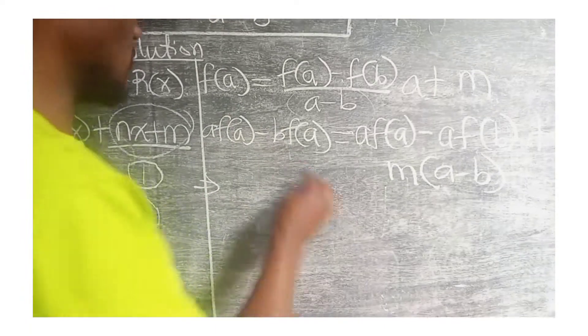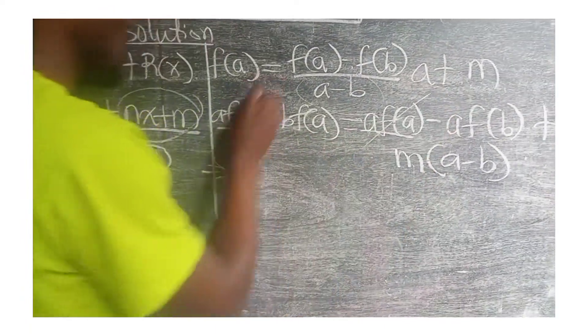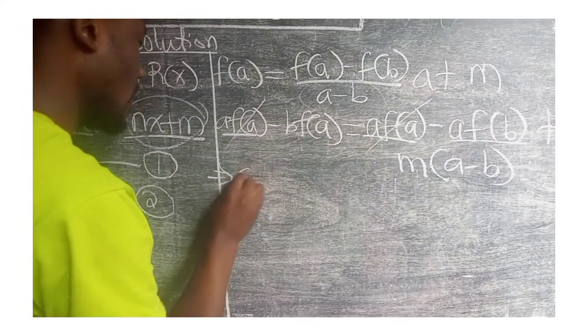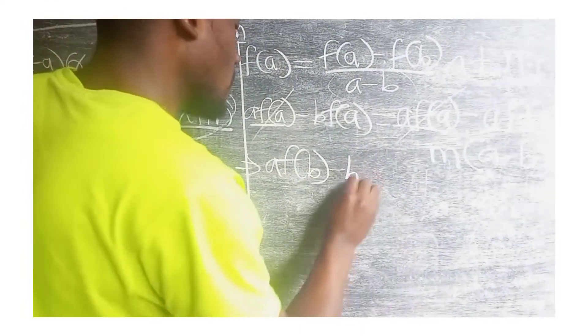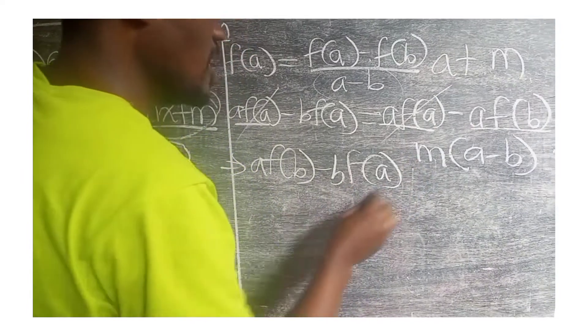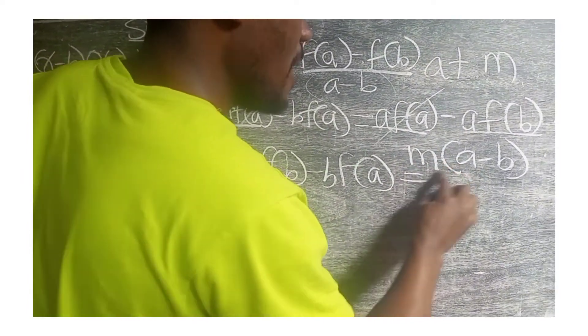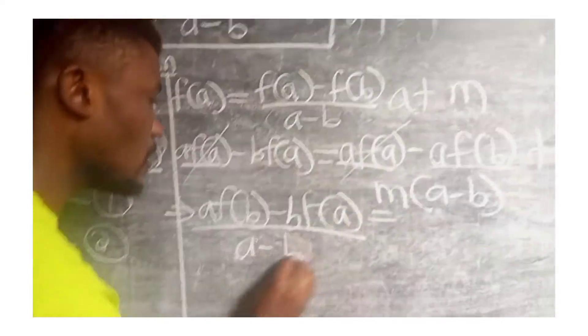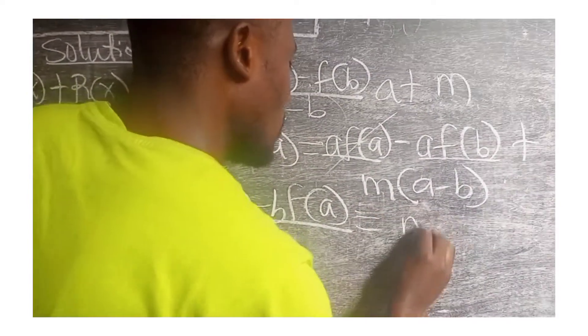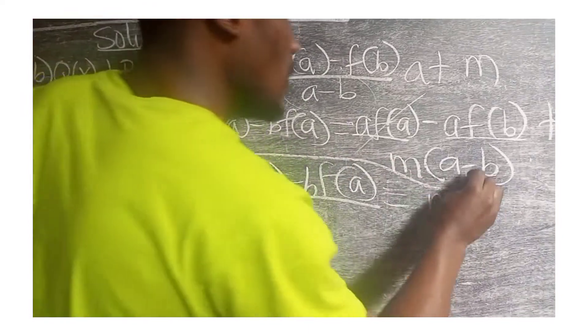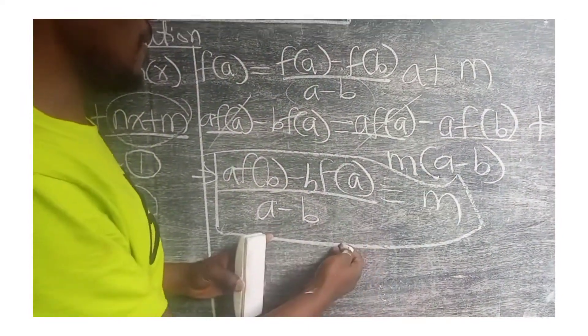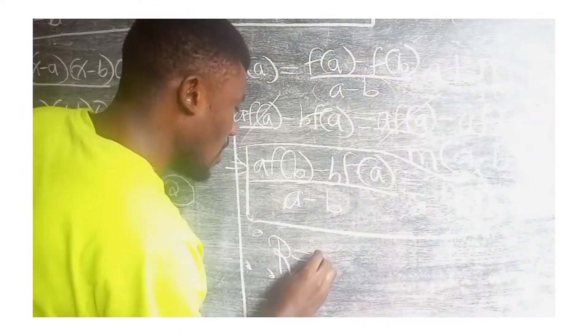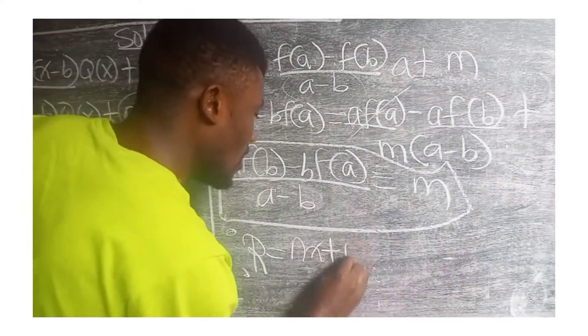From here, we are now going to see that this and this are the same, so they can cancel out. We bring this one to this side. We are going to have a·f(b) - b·f(a) equal to m times (a-b). So, making m the subject, we divide both sides by a-b, which will simply just give us the m that we want. Therefore, we can now substitute. We know that our remainder is equal to nx+m.